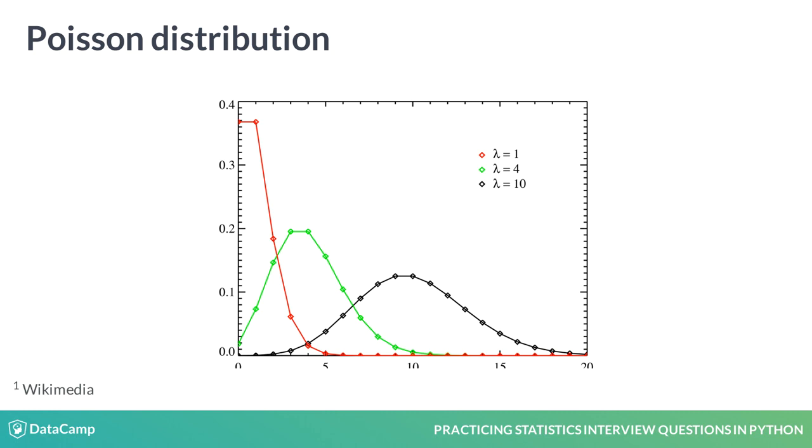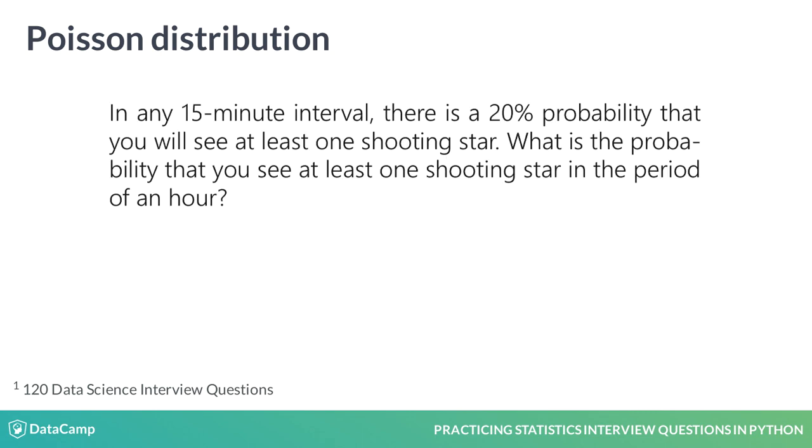Here we can see a few Poisson curves given different values of lambda. As the rate of events changes, the distribution changes as well.